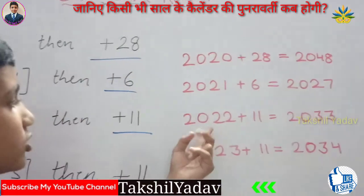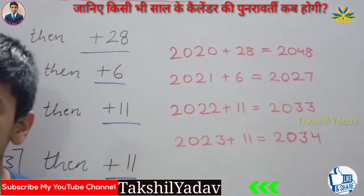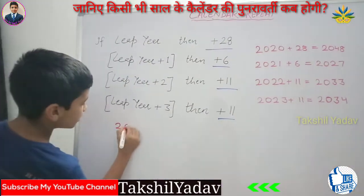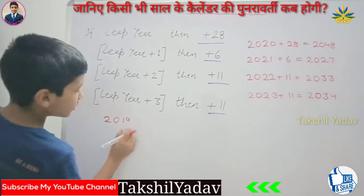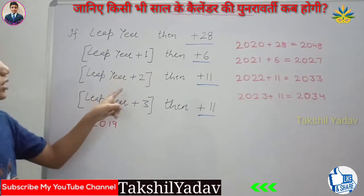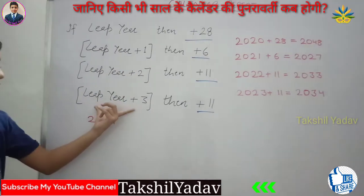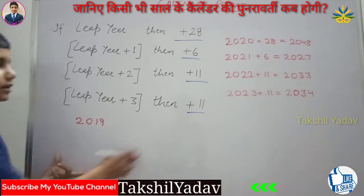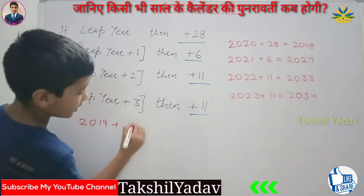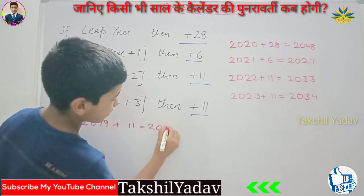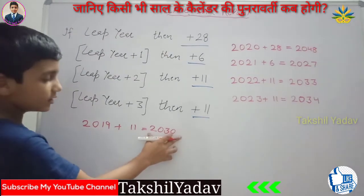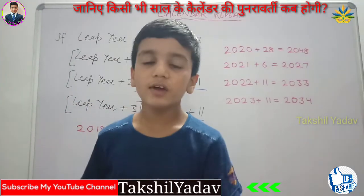Now suppose we have the year 2019. When we divide 2019 by 4, we find it is not a leap year, not leap year plus 1, not leap year plus 2 — so the only option is leap year plus 3. We add 11 to 2019 and get 2030. Thus we can say that 2019's calendar will repeat in 2030.